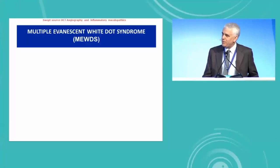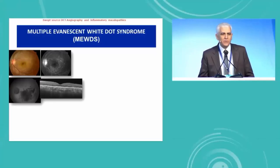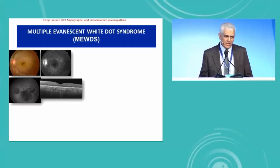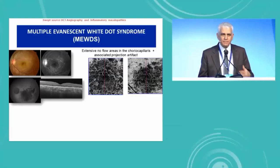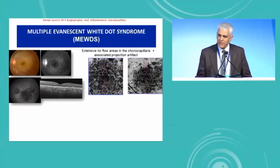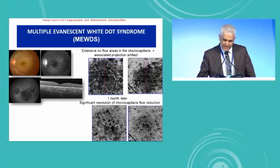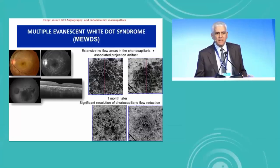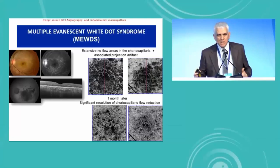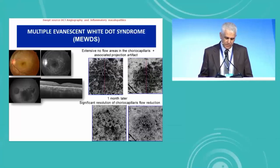The third case is a very typical case of MEWDS in a young patient. A diagnosis of MEWDS could be made based on typical clinical findings and fluorescence angiography, ICG angiography, and OCT. However, OCT angiography, like previous cases of MEWDS, shows extensive no-flow areas in the choriocapillaries associated with projection artifact. One month later, a significant resolution of choriocapillaries flow reduction was observed.